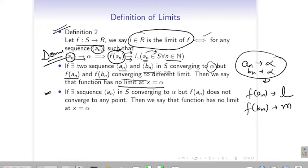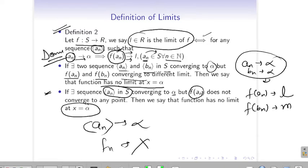Another point to remember: if there exists a single sequence aₙ in the domain which is converging to α, but f(aₙ) does not converge at any point, then we say that the function has no limit. So we have seen when limits will exist and when limits will not exist.